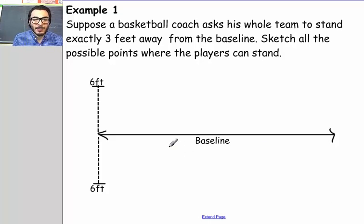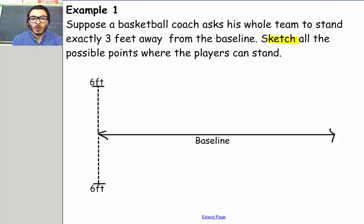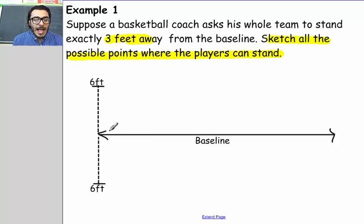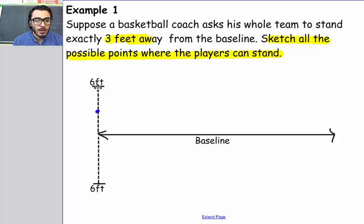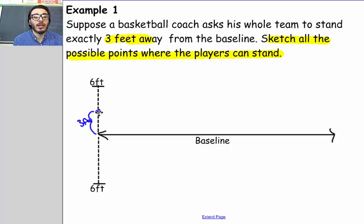We're given a baseline and we are told that the distance from the baseline up to this point here is 6 feet, and the baseline up to this point is 6 feet. Our task is to sketch all the possible points where the players can stand. Now, they have to be 3 feet away from the baseline. Going by that locus condition, a player could stand right over here — that's the halfway point between the baseline and the 6 feet. So from here to here is 3 feet, and if a player stands here, he'll fulfill that condition of being exactly 3 feet away from the baseline.